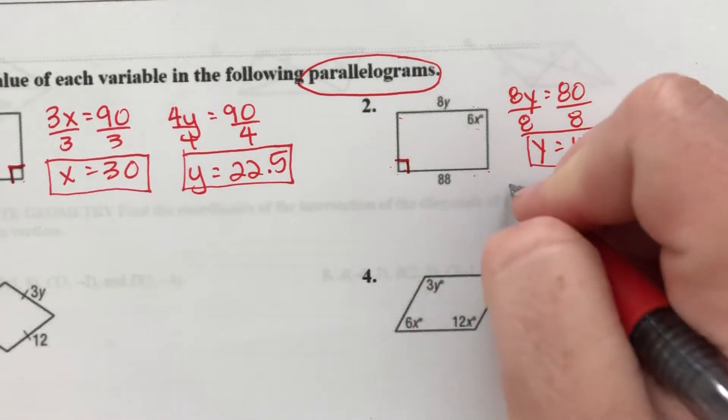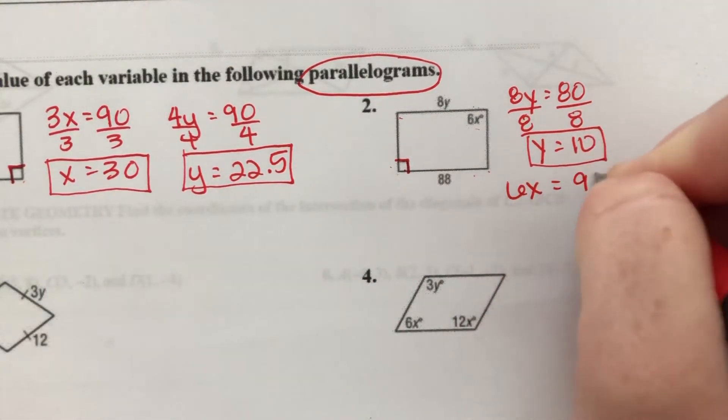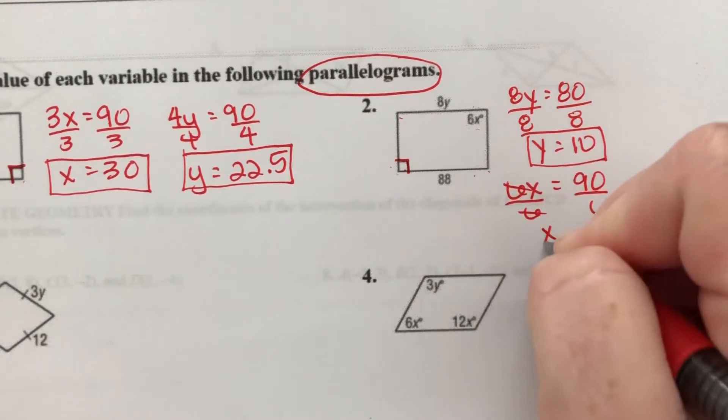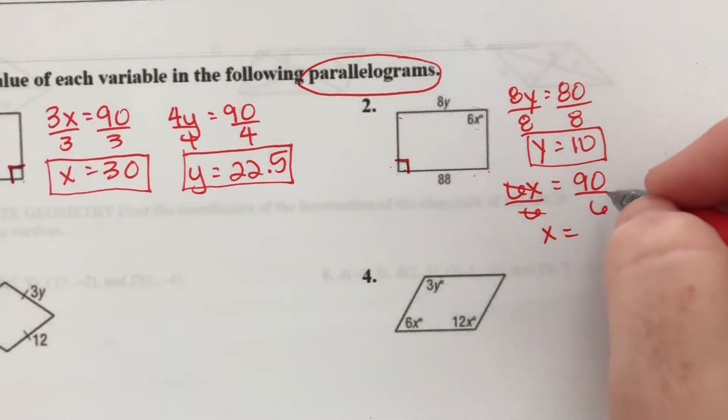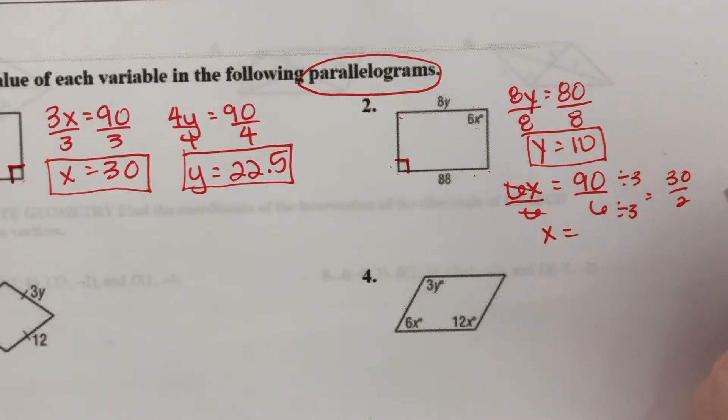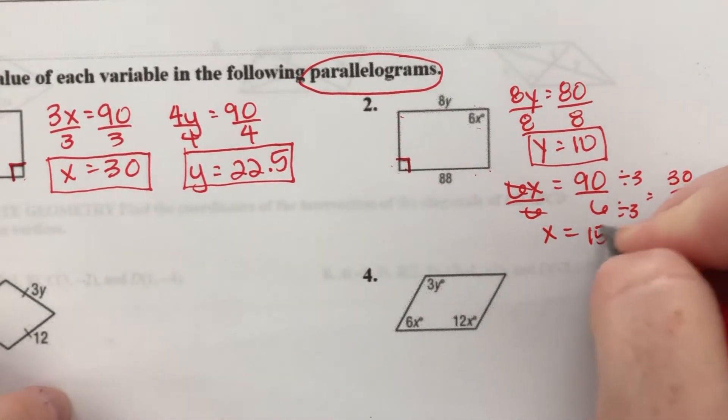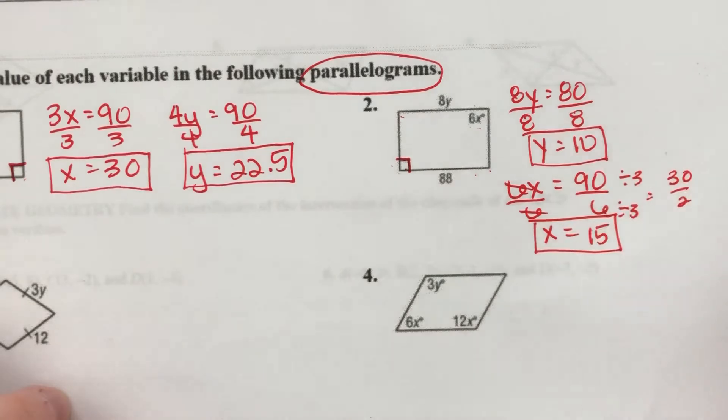This guy is 6x, so I know 6x equals 90. Divide both sides by 6. x equals 90 divided by 3, the top and the bottom. That's 30 divided by 2, 15.